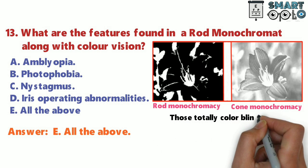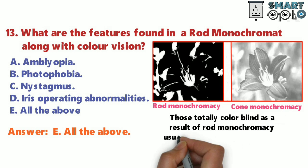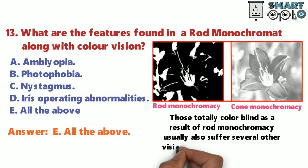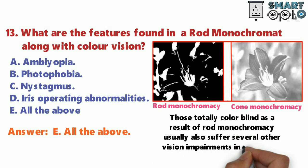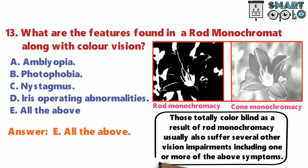Those totally colorblind as a result of rod monochromacy usually also suffer several other vision impairments, including one or more of the above symptoms.